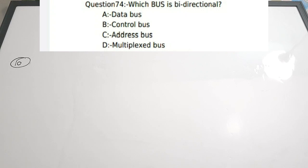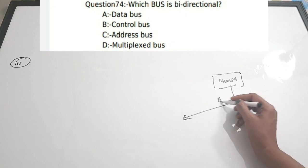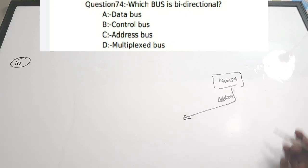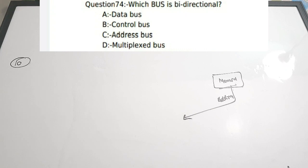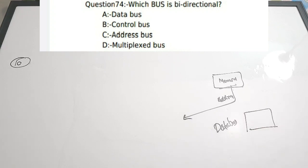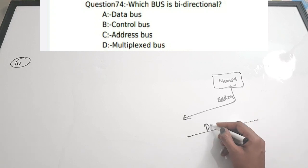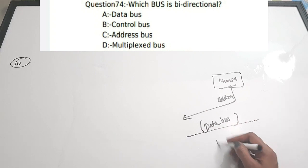Tenth question: Which bus is bidirectional — A) data bus, B) control bus, C) address bus, D) multiplexed bus? The correct answer is A — data bus. The address bus only needs to fetch addresses from memory, so it does not need to be bidirectional. However, the data bus must be bidirectional, as data needs to flow both to and from memory. Correct answer is option A.